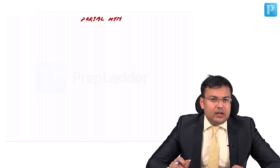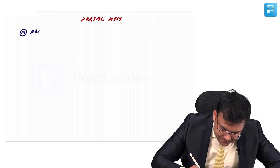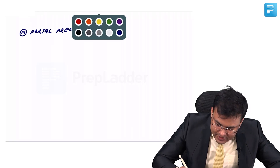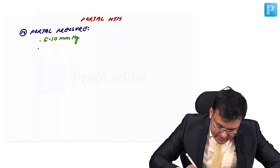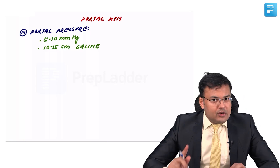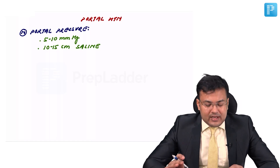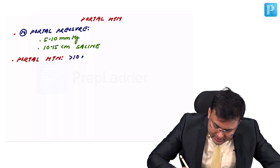What is the normal portal pressure? Normal portal pressure is 5 to 10 mmHg, or 10 to 15 centimeter saline. The definition of portal hypertension is portal pressure more than 10 mmHg.